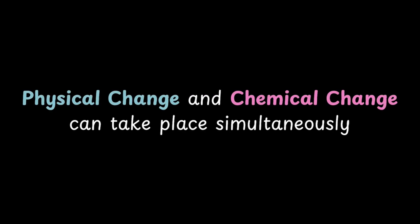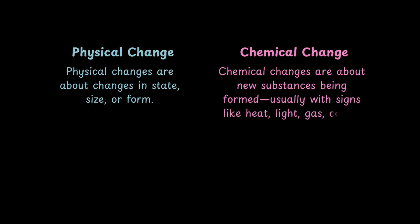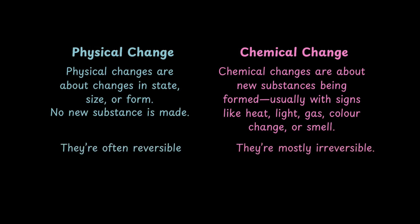So what did we learn? Physical changes are about changes in state, size or form. Chemical changes are about new substances being formed, usually with signs like heat, light, gas, colour change or smell. In physical changes, no new substances are made. In chemical changes, new substances are formed. And while physical changes are mostly reversible, chemical changes are mostly irreversible. And yes, sometimes physical and chemical changes can take place together.